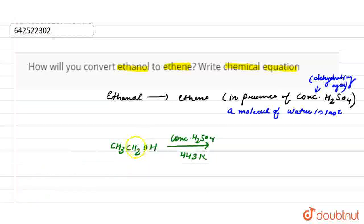So what happened in this reaction, the sulfuric acid will act as a dehydrating agent at 443 Kelvin. Ethanol can be dehydrated to give ethene.